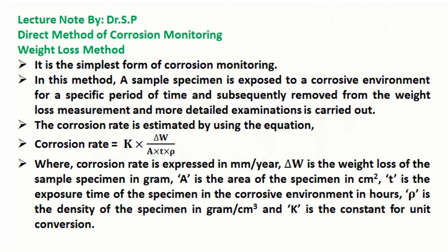There are different methods of corrosion monitoring. Out of them, the weight loss method is also one of the methods of corrosion monitoring. Let's discuss the weight loss method of corrosion monitoring. It is the simplest form of corrosion monitoring.